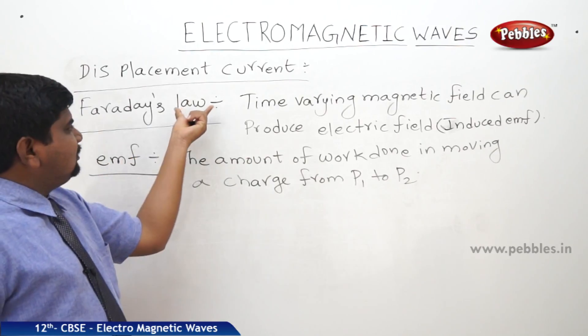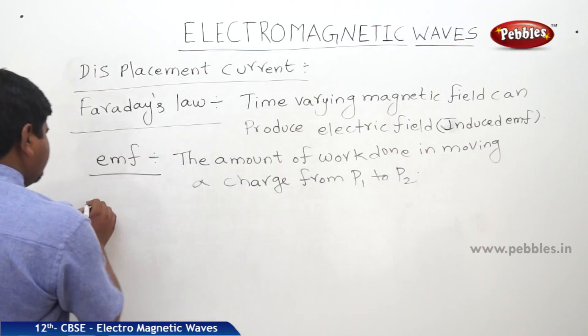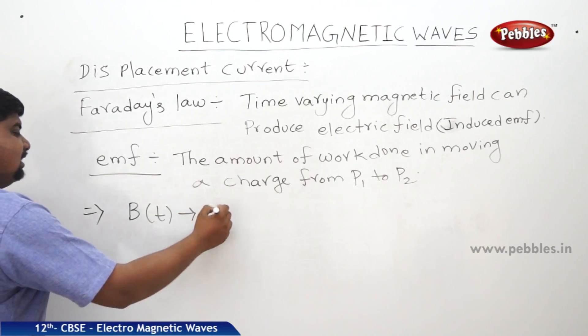So, if EMF exists, magnetic field also will exist. So, what we can write. Time varying magnetic field can produce the EMF.